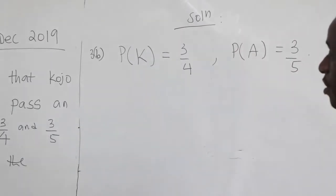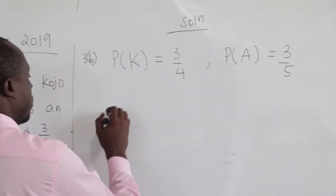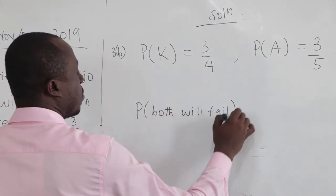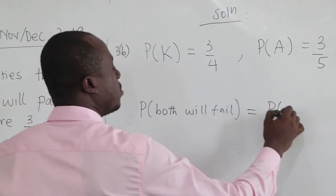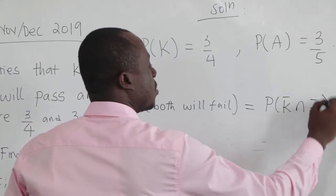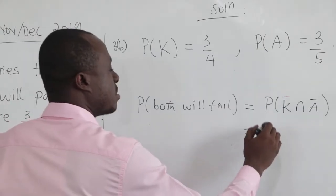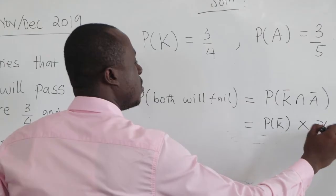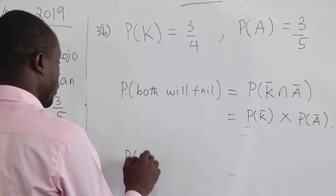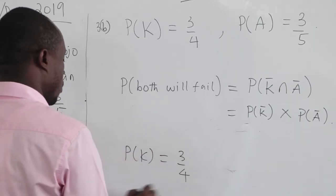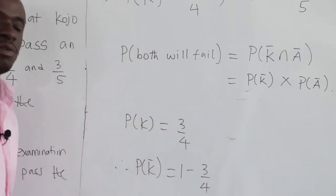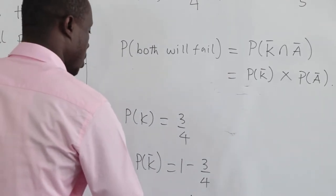The first one says find the probability that both will fail. The probability that both will fail is the same as the probability of K complement intersection A complement. And this is the same as P of K complement times P of A complement, because it is an independent event. We know P of K is 3 over 4, therefore P of K complement is 1 minus 3 over 4, which gives us 1 over 4.